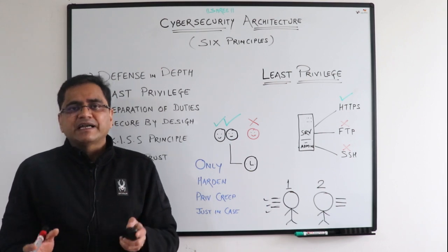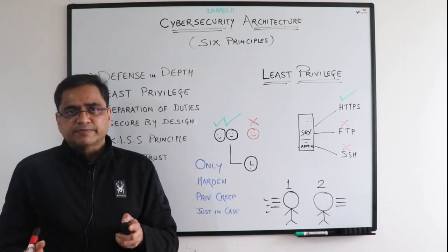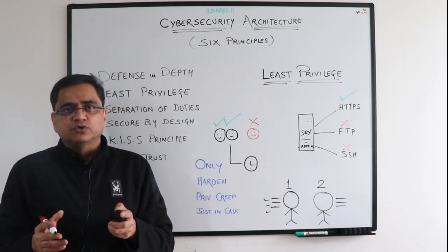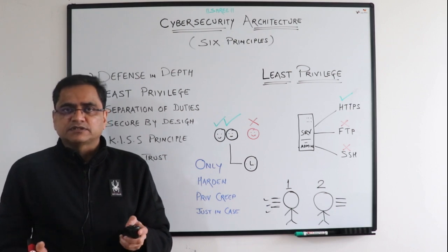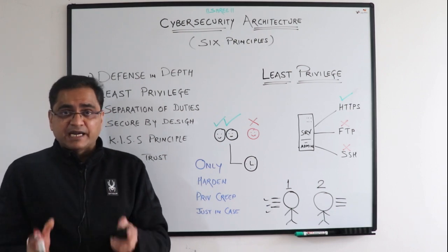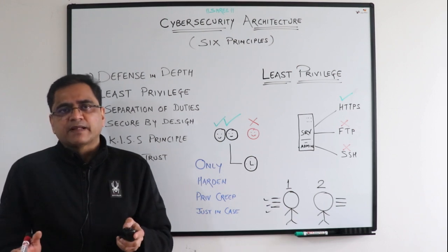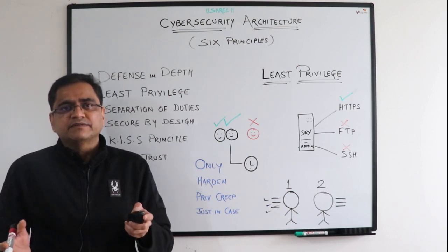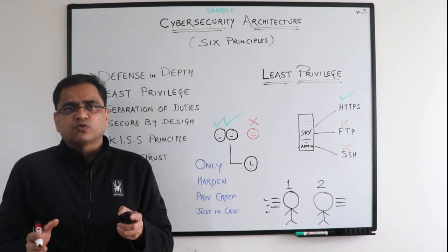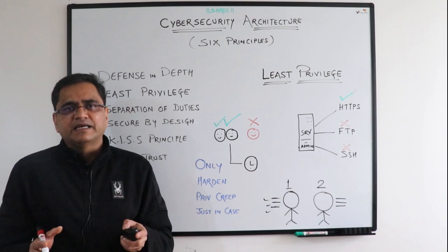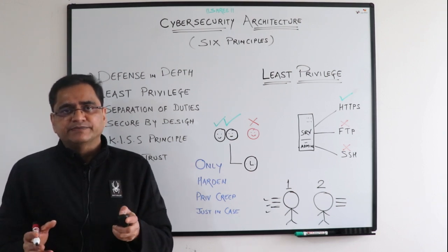Another example of hardening is to remove all unnecessary IDs that are on the system and change the names of the IDs we do keep from the default ones. For instance, if the administrator ID on the system as configured out of the box is 'admin', let's change it — make it something more specific. And change all the default passwords. We don't want the system in a vanilla configuration because the bad guys will know what that is and know how to break in.